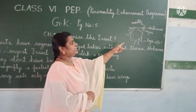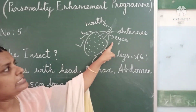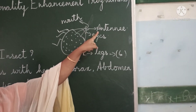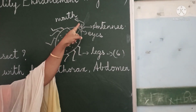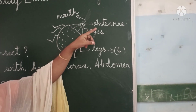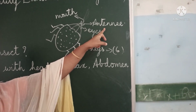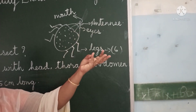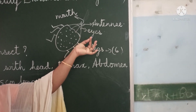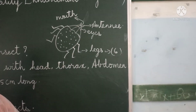Now we can see the picture over here. The insect's head will have three parts: eyes, antenna, and mouth. With the mouth they eat, with the eyes they see, and with the antenna they feel. With the antenna they can sense smell, they can hear, they can touch — so all of these things they can do with the help of the antenna.